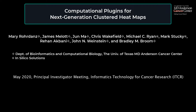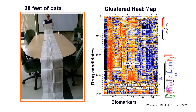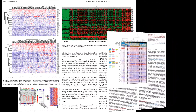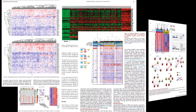Authors and affiliations are included in the video description. In the early 1990s, we developed clustered heat maps for visualizing genomic, transcriptomic, proteomic, pharmacogenomic, and other omic data. As the ubiquitous graphical visualization for omic data, clustered heat maps have appeared as static images in many thousands of publications.